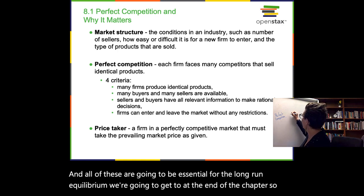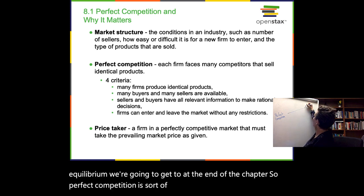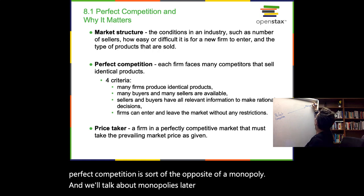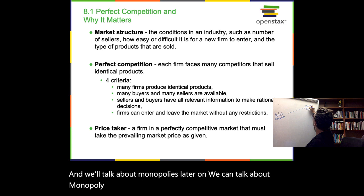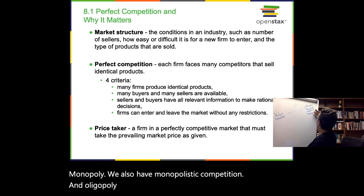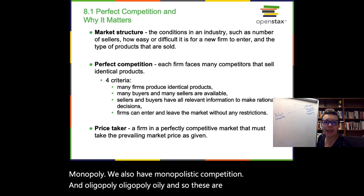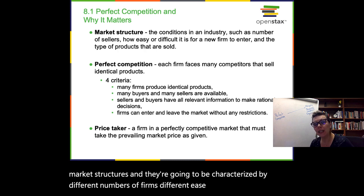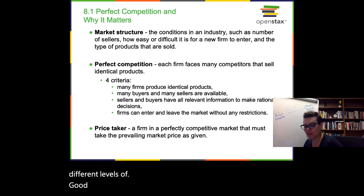Perfect competition is sort of the opposite of a monopoly, which we'll talk about later. We also have monopolistic competition and oligopoly. These are different versions of market structures, characterized by different numbers of firms, different ease of entry and exit, and different levels of good differentiation.